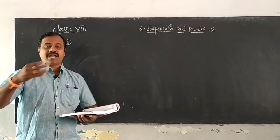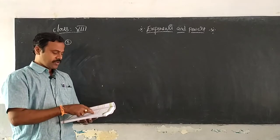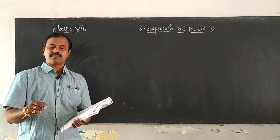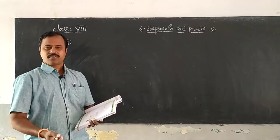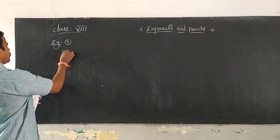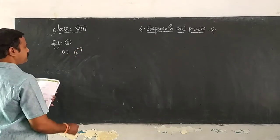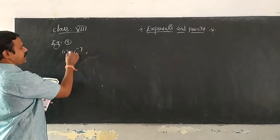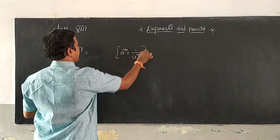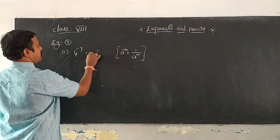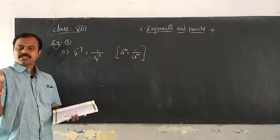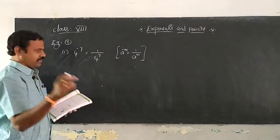Express each of the following with positive exponents. They have given you negative exponents and you have to convert them into positive exponents — just expressing, no need to find the value. Coming to the first question: 4 power minus 7. You can immediately identify the formula: a power minus m is equal to 1 by a power m. So this becomes 1 by 4 power 7. No need to find the value of 4 power 7.